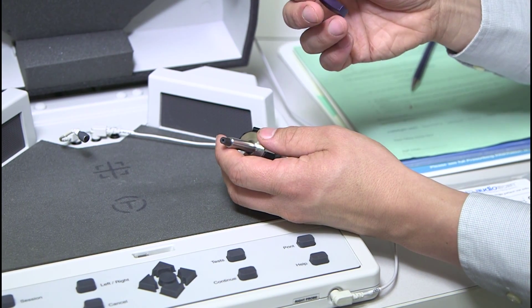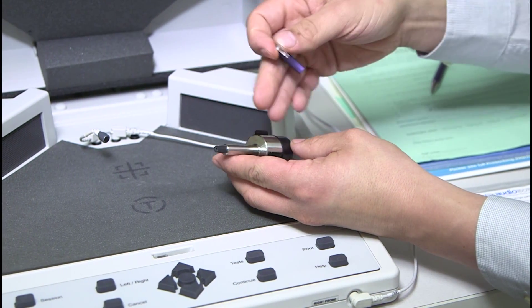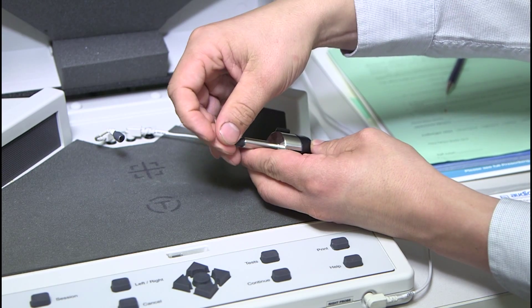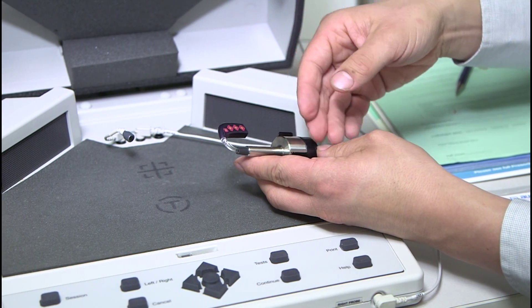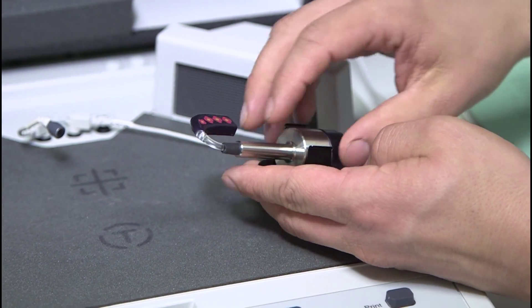After we've determined how sound goes into that child's ear we take this hearing aid and we just attach it to this coupler. And what happens here is this coupler has a microphone attached to it and so it measures how loud the sound is after it goes through the hearing aid.